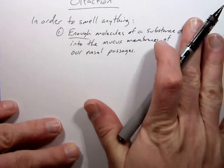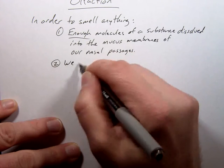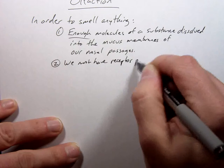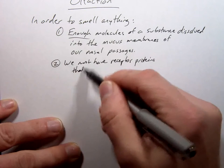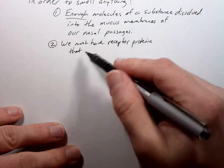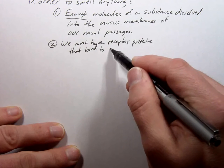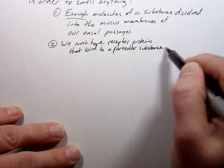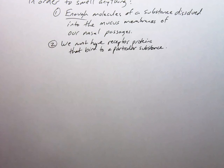That's only half of it. The other half of it is this: We must have receptor proteins that bind to a particular substance. Without this, it doesn't matter what gets dissolved in the mucus membranes. If we don't have a protein that binds to it, it's essentially useless.